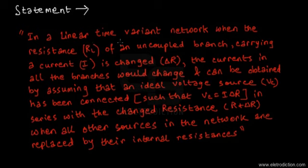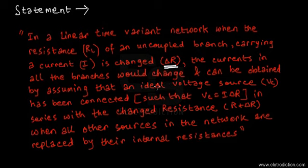It states that in a linear time-variant network, when the resistance RL of an uncoupled branch carrying a current I is changed — and this change is represented by delta R — then the currents in all the branches would change and can be obtained by assuming that an ideal voltage source denoted by VC has been connected.